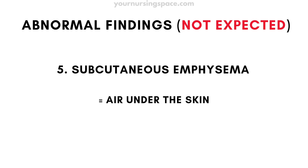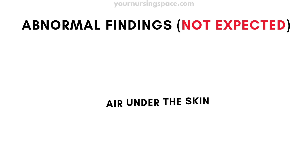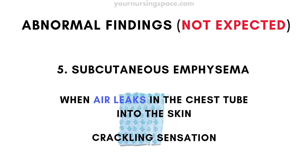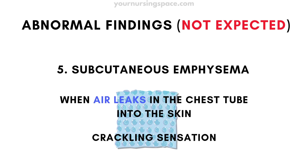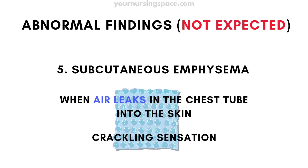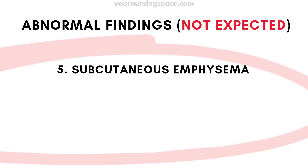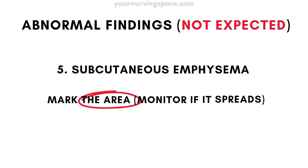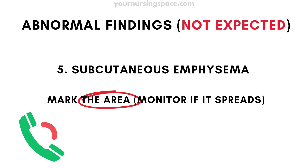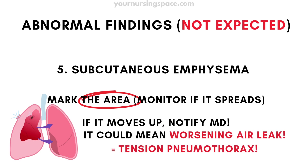Subcutaneous emphysema — air under the skin — happens when air leaks from the chest tube into the skin. You'll feel a crackling sensation, like popping bubble wrap when you touch the skin. Mark the area to see if it spreads. If it moves up to the face, neck, or chest, call the provider ASAP, as it could mean a worsening air leak.